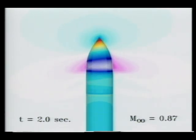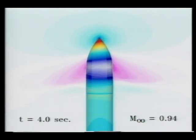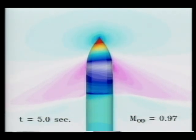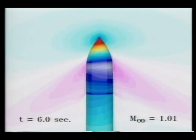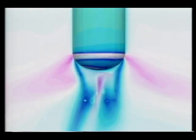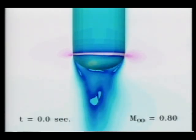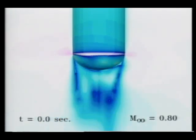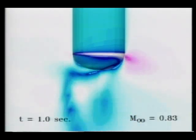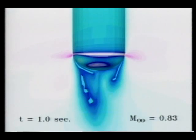Notice the shock development shown by the pressure contours on the leading surface of the tank. On the base of the tank, we see a highly unstable flow regime.